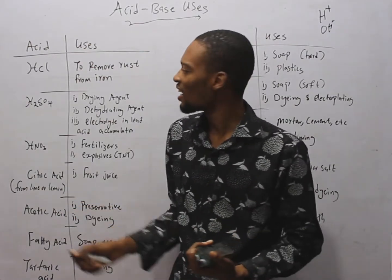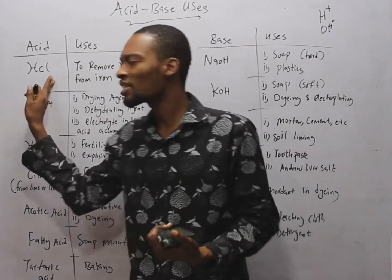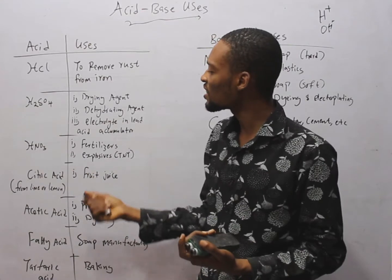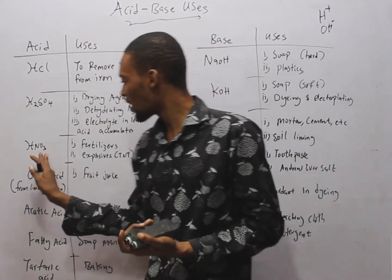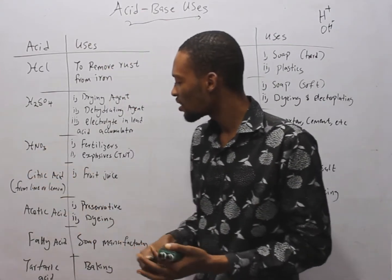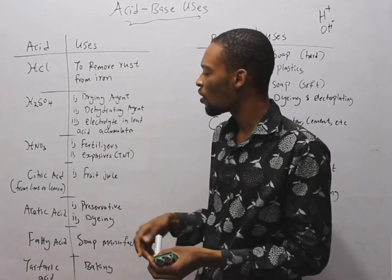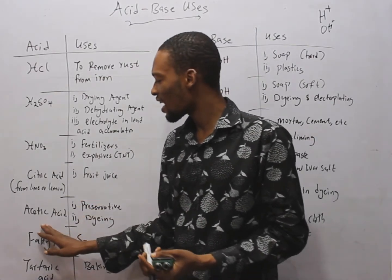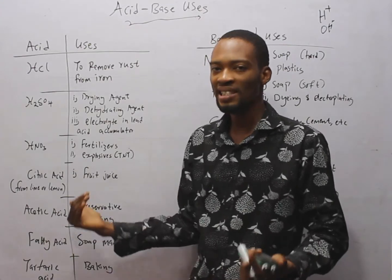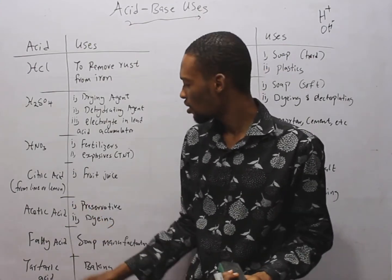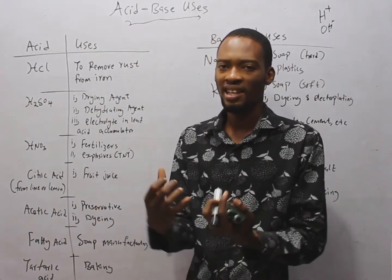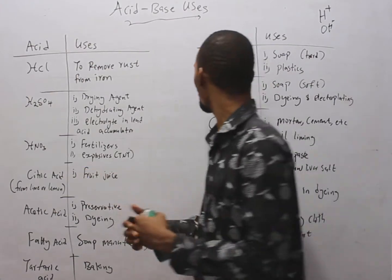Common examples of acids are hydrochloric acid; H2SO4, tetraoxosulphuric acid; trioxonitric acid, HNO3; citric acid from lemon or lime; acetic acid, also referred to as ethanoic acid; fatty acids; and tartaric acid.